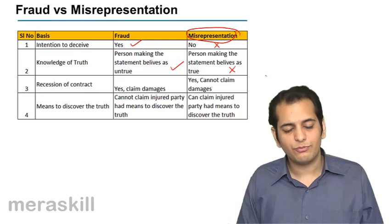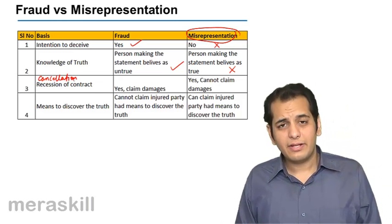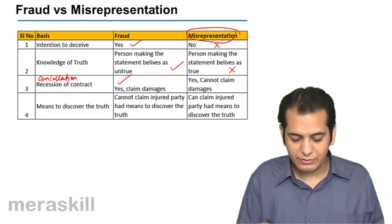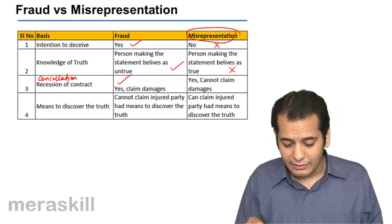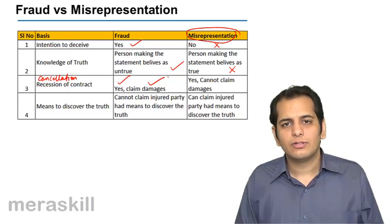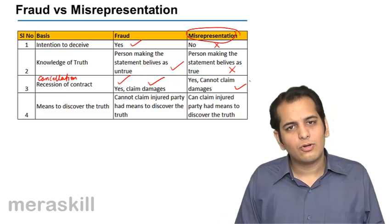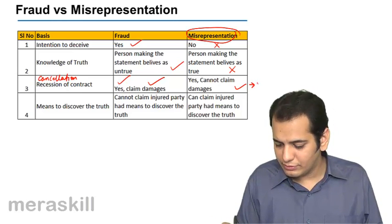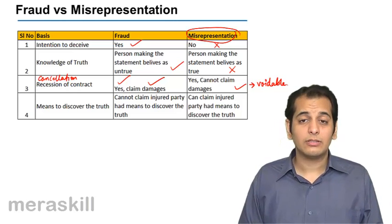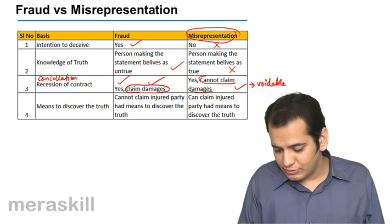Third: rescission of a contract. Rescission means cancellation or termination. Can the aggrieved party rescind the contract, cancel it, or avoid it? Yes. In fraud, the aggrieved party can rescind the contract and also claim damages for whatever loss he has incurred. In misrepresentation, the contract can also be rescinded because in both cases the contract is voidable. However, the key distinction is that in fraud, damages can be claimed, whereas in misrepresentation, damages cannot be claimed.